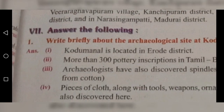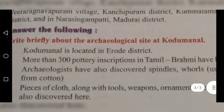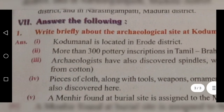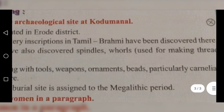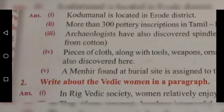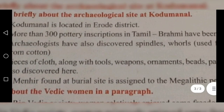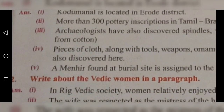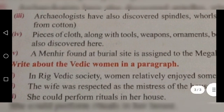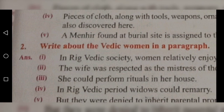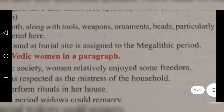Roman numeral 7: Answer the following. Write briefly about the archaeological site at Kodumanal. Kodumanal is located in Erode district. More than 300 pottery inscriptions in Tamil Brahmi have been discovered there. Archaeologists have also discovered spindle holes used for making thread from cotton. Pieces of cloth along with tools, weapons, ornaments, and beads — particularly carnelian — were also discovered here. A menhir-founded burial site is assigned to the Megalithic period.